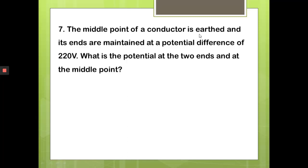So the answer is: at the midpoint the potential is 0 V, and at the two ends the potentials are +110 V and −110 V respectively.